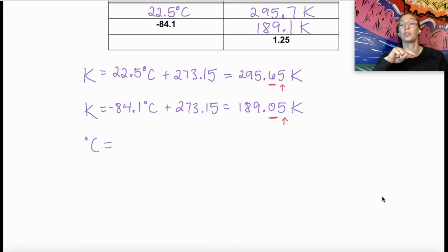Degrees Celsius, we're going to go Kelvin temperature minus 273.15. So we're going to wind up with a negative Celsius temperature here. We're going to take 1.25 Kelvin, two decimal places this time, minus 273.15.